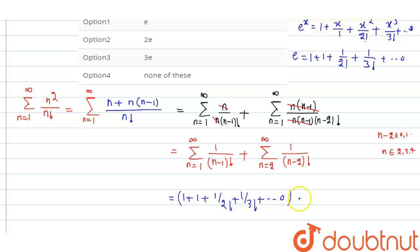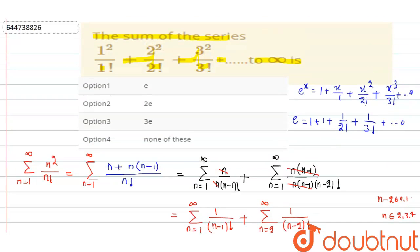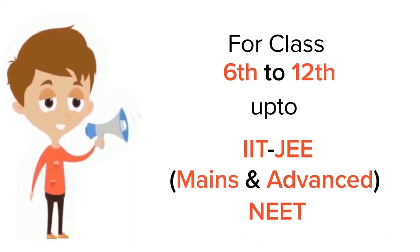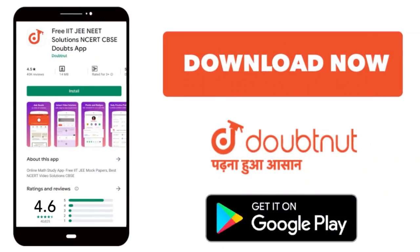Similarly, the second summation is also written as 1 + 1 + 1/2! + 1/3! + ... which also equals e. So the total is e + e = 2e. Therefore the correct answer is option 2. Thank you. For class 6 to 12, IIT JEE and NEET level, trusted by more than 5 crore students — download DoubtNet today.